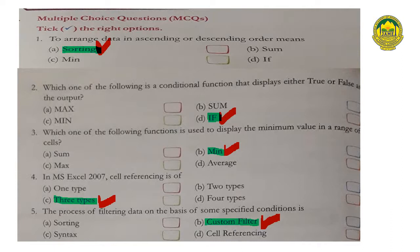Third, which one of the following functions is used to display the minimum value in a range of cells? (a) Sum (b) Minimum (c) Maximum (d) Average. Answer: (b) Minimum is the right option.